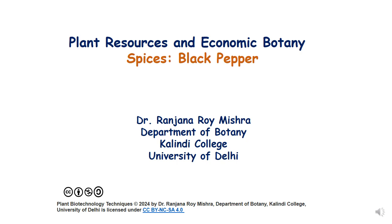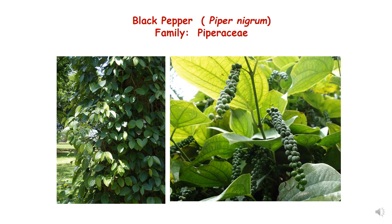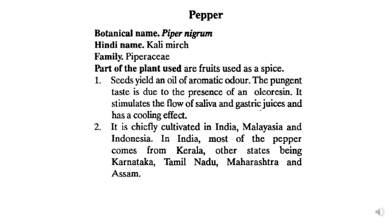In this lecture we will be discussing spices — black pepper, which is also called Kali Mirch. This topic comes under plant resources and economic botany. The plant is a climber, like a vine, and has two types of branches: fruiting lateral branches and vegetative branches. It belongs to the family Piperaceae.